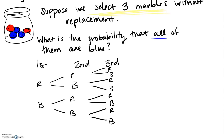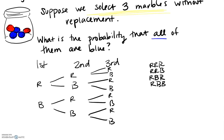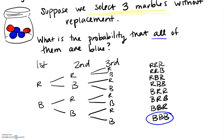All of these are the different ways this could happen. The first one: all red. The second: a single blue in the second position. A single blue in the last position — R, R, B. Then R, B, R — single blue in the middle position. Two blues. Two reds with blue in the first. So these are the eight different possible outcomes, and the only one we are interested in this particular case is all three marbles being blue.